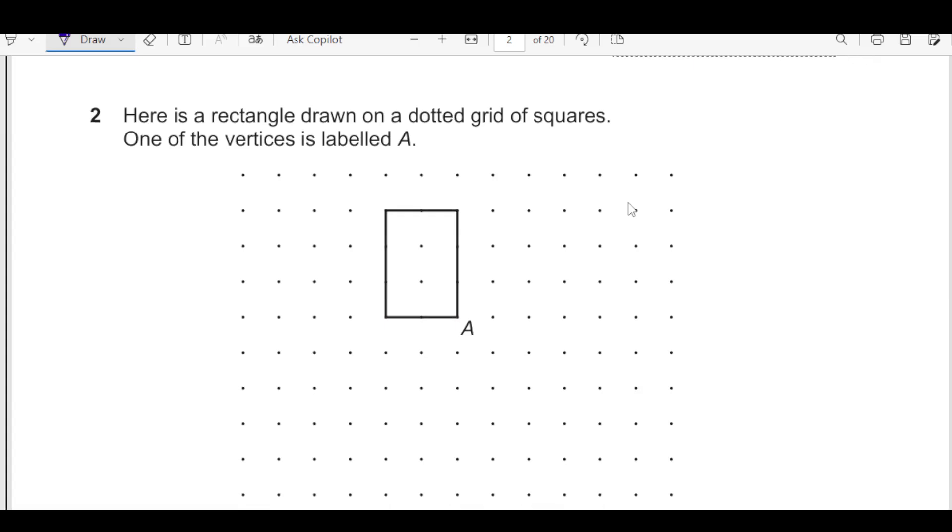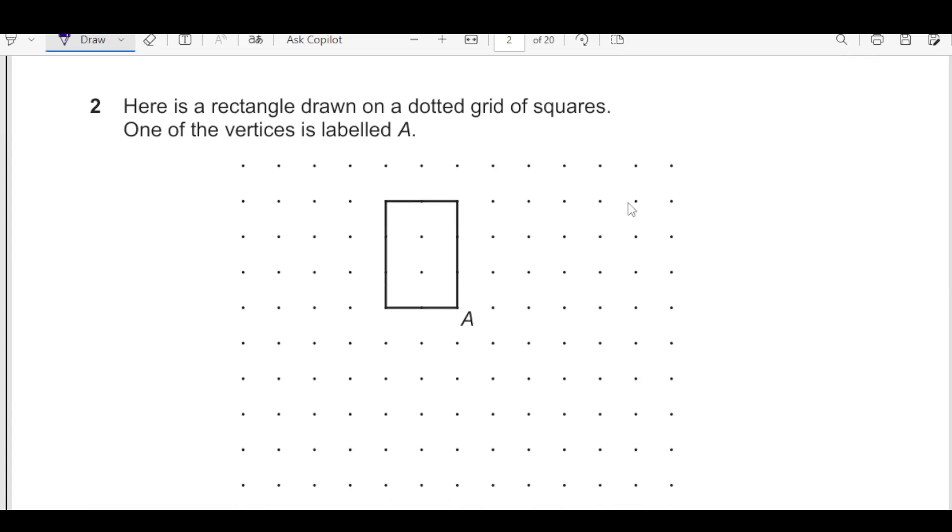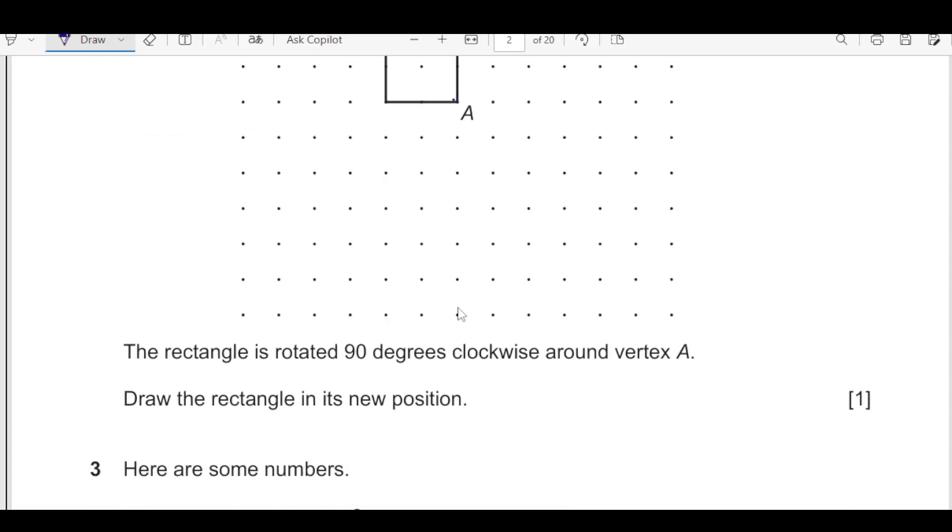Here is the rectangle drawn on a dotted grid of squares. One of the vertices is labeled as A. This is the vertex which is labeled as A. Let us see what is the question. The rectangle is rotated 90 degrees clockwise around vertex A. Draw the rectangle in its new position.